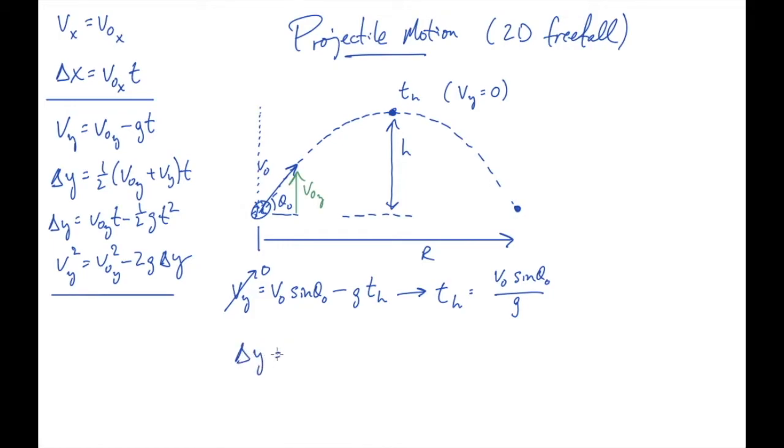So delta y, how high it goes, is half of v naught y plus vy times t. All right, at the top, that is zero. That's the time to the highest point, and that's v naught sine theta naught. So if we substitute all that in, notice what we're going to have, v naught sine theta naught, v naught sine theta naught over g. So we've got a couple things squared over g, and there's over two there. So we end up with v naught squared sine squared theta naught over 2g.